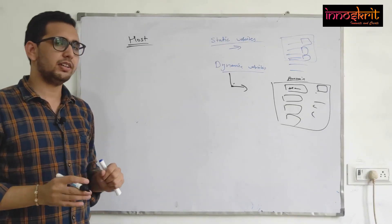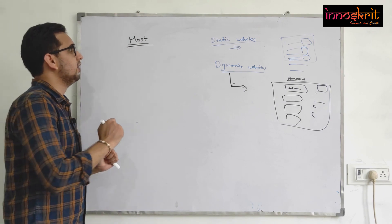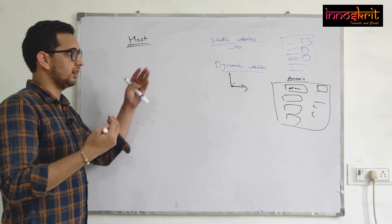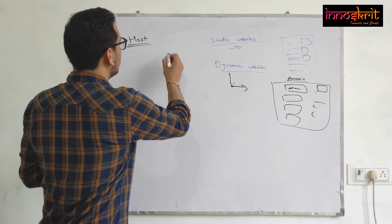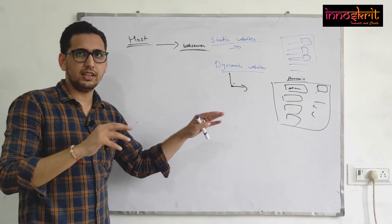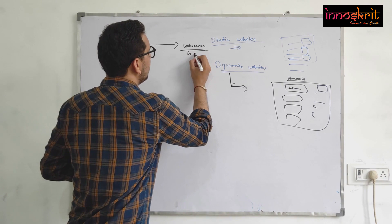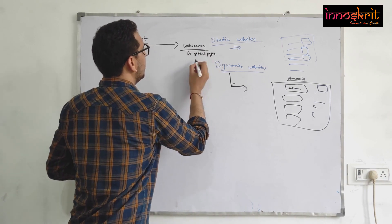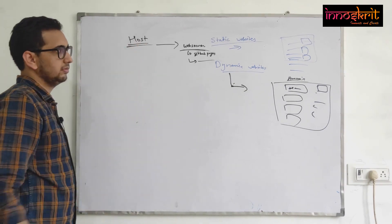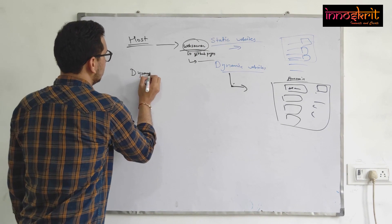For hosting a static website, the content is placed on a server. You as a client request it from the web, it returns the content, and your browser displays it. A web server is a server that is running and you put your web code there. For example, you can host it on GitHub Pages, or buy some space and host your own server. Only a web server is required for a static website.